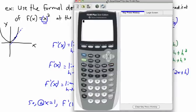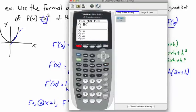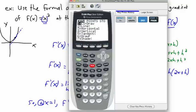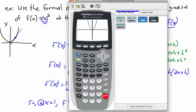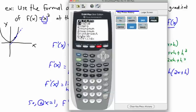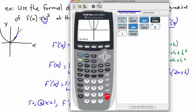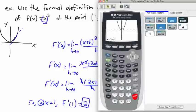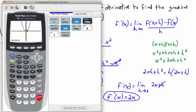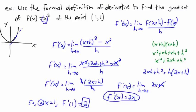We can verify this with a TI-83 or TI-84 calculator. I enter y = x², press graph, then go to Second Trace to get Calc, and select dy/dx. At x = 1, the calculator gives dy/dx = 2. Look — the same answer! That confirms it.